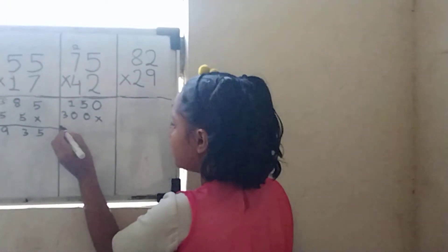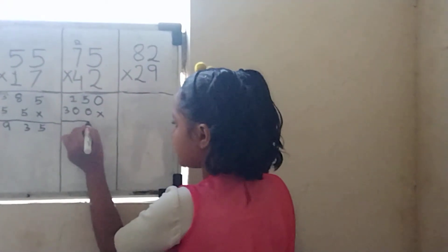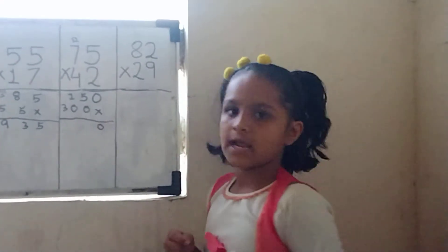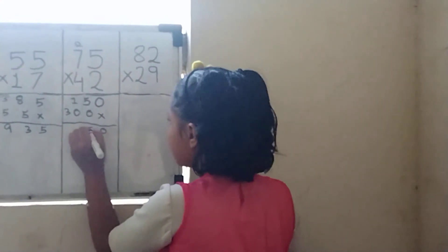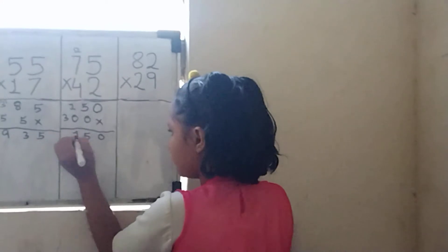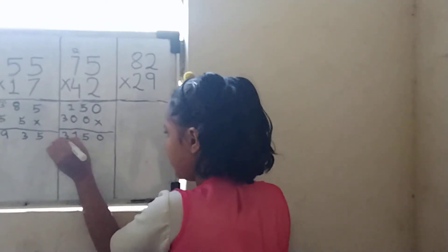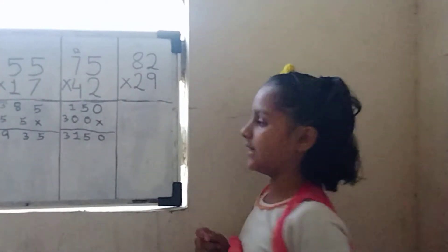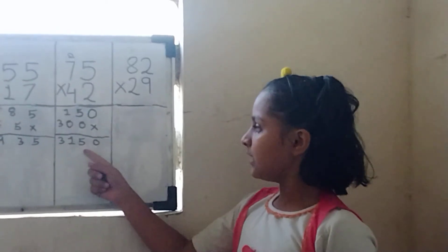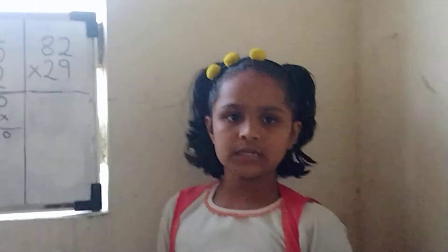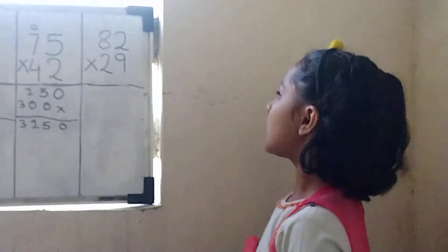Now we will do plus. 0 will be here, 5 will be here, 1 will be here, and 3 will be here. Then our total answer is 3150.